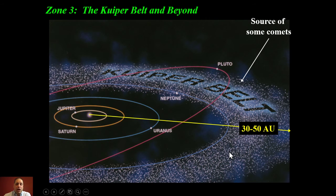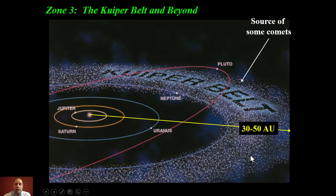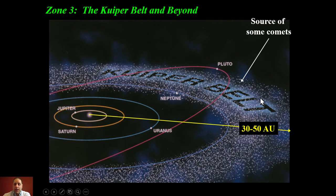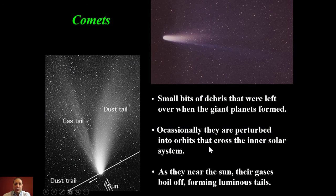Beyond Neptune we have something called the Kuiper Belt, named after the astronomer Kuiper. It's a huge swarm of objects made up of ice and dust — up to a hundred thousand or more objects that are a hundred kilometers in size, plus many much smaller ones. Pluto, for part of its orbit, is within the Kuiper Belt — it is a Kuiper Belt Object, or KBO, also called a trans-Neptunian object. It has an extremely elliptical orbit that is also very tilted.